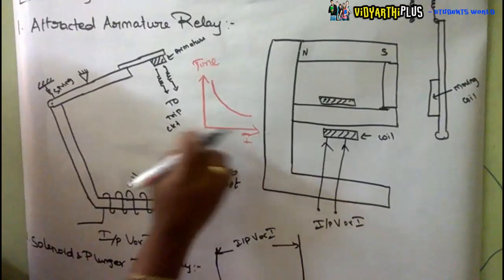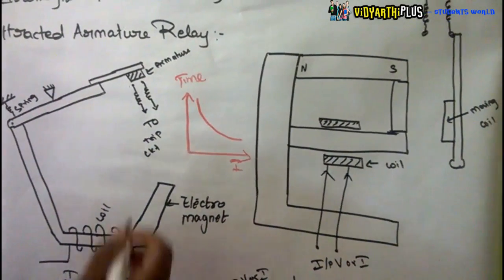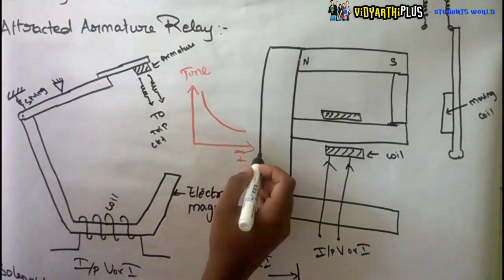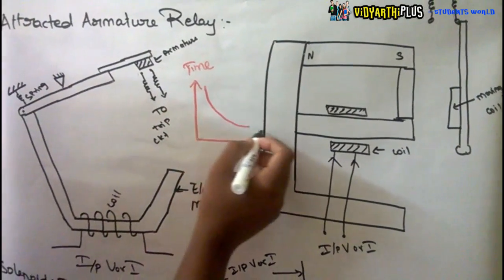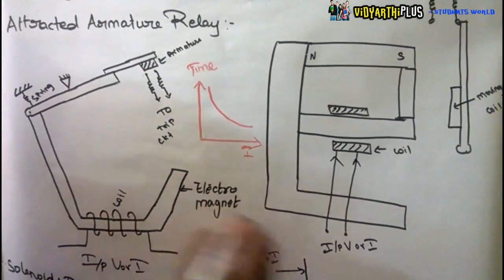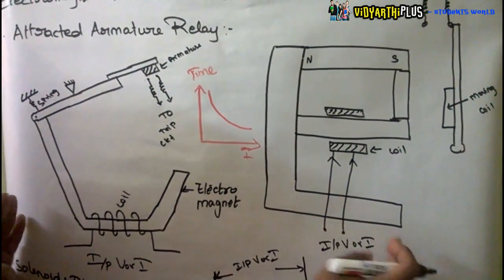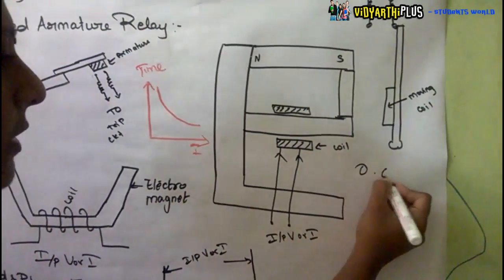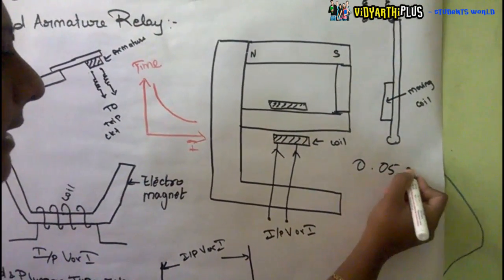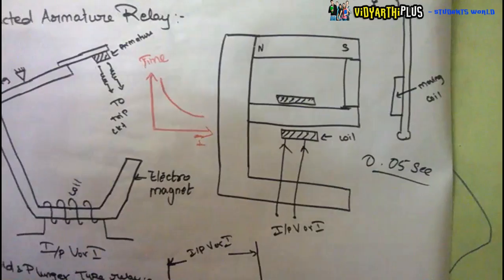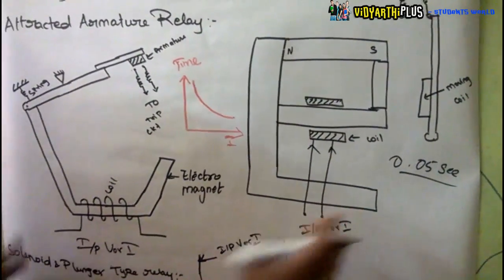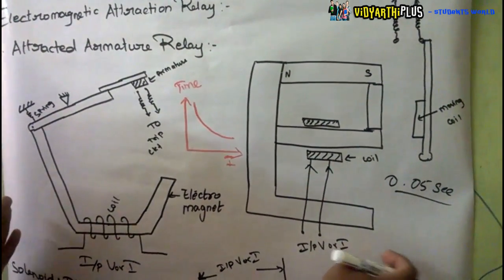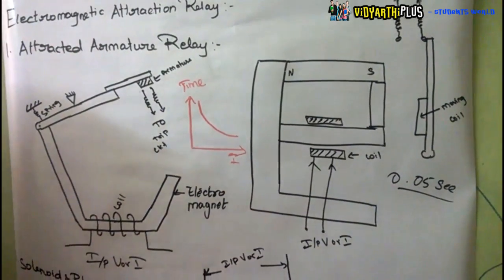The graph shows the relationship between current and operating time. As the current starts increasing, the time of operation decreases. The time of operation of this relay is very fast — about 0.05 seconds — so it operates at a very high speed. It is applicable both for AC and DC type of relays.